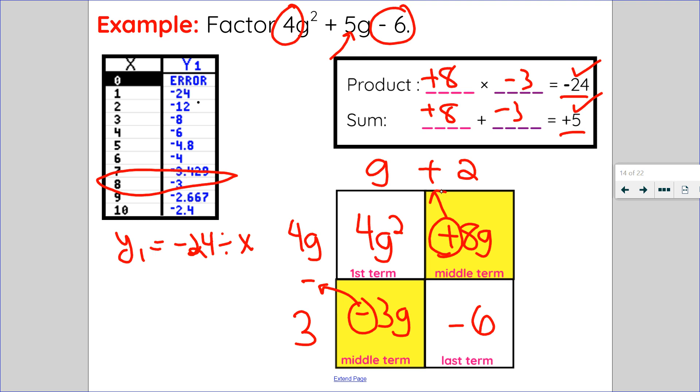So that means that my trinomial up here factors as 4g minus 3 times g plus 2.